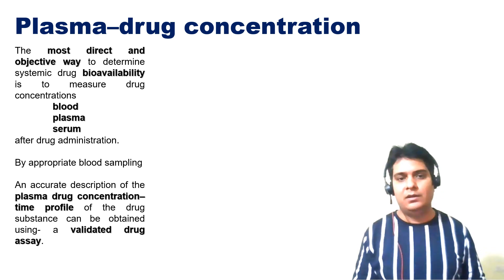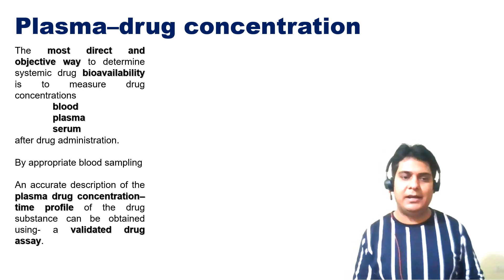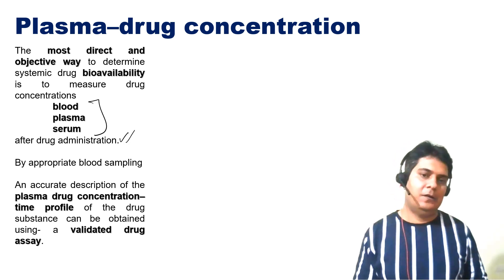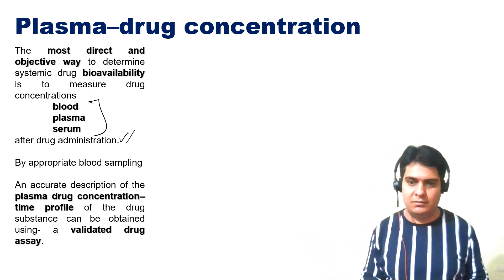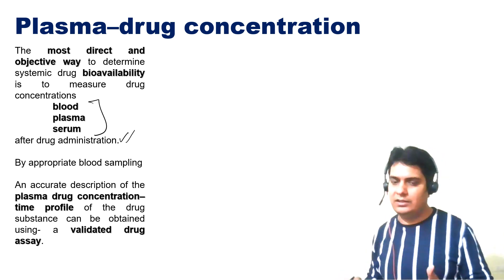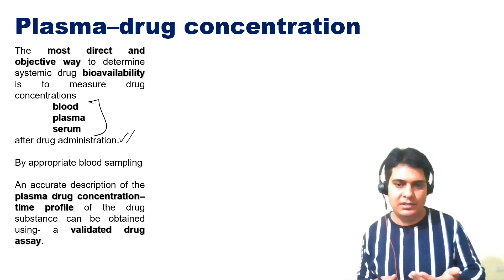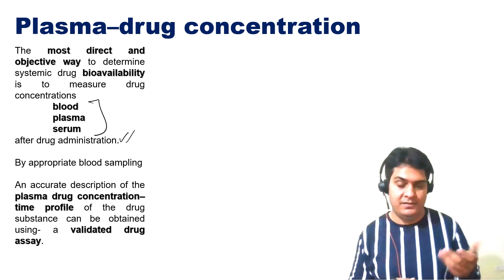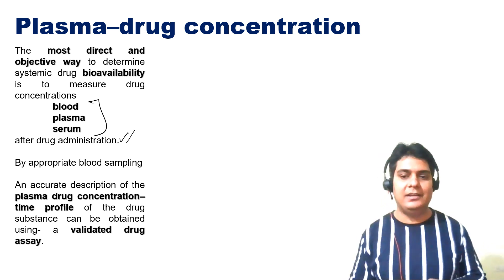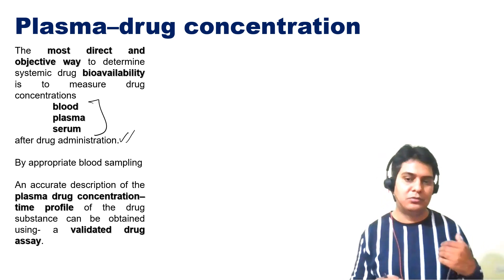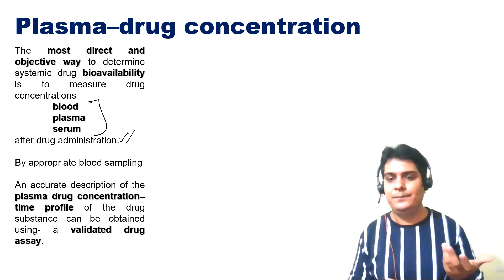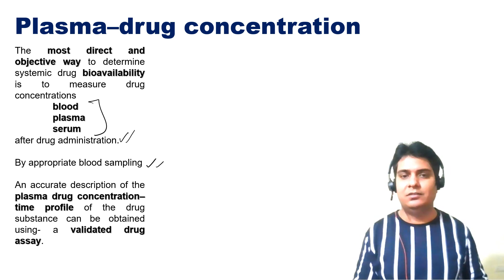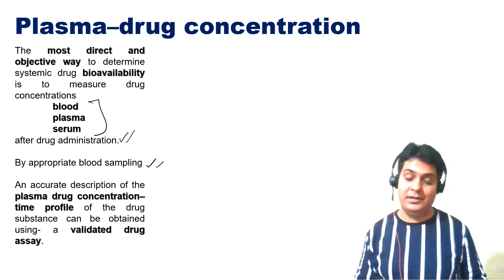You can see the drug concentration in blood, plasma, and serum after drug administration per unit time. Over 2-4 days, you can see that if the drug is available to a maximum extent, by appropriate drug sampling we can do this particular thing and determine the plasma drug concentration.